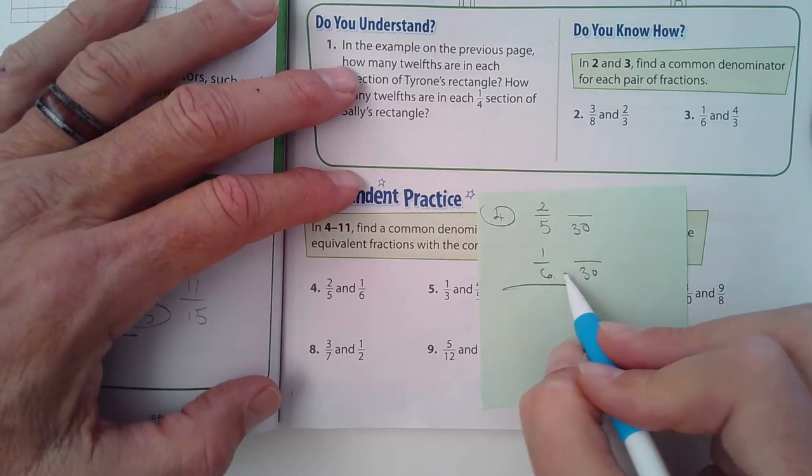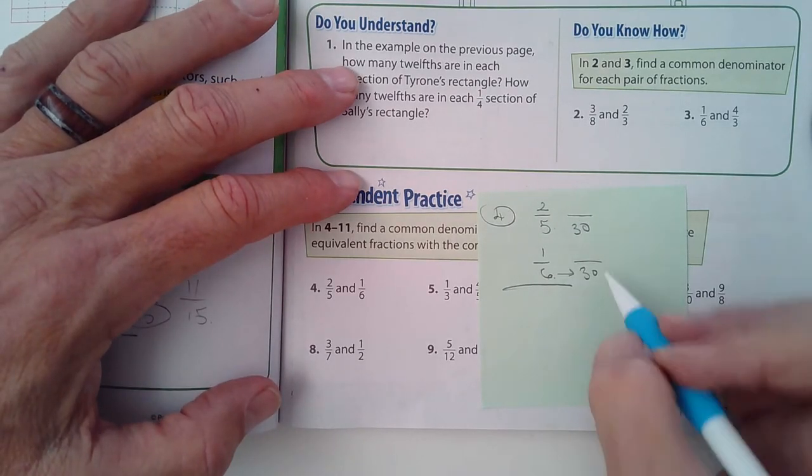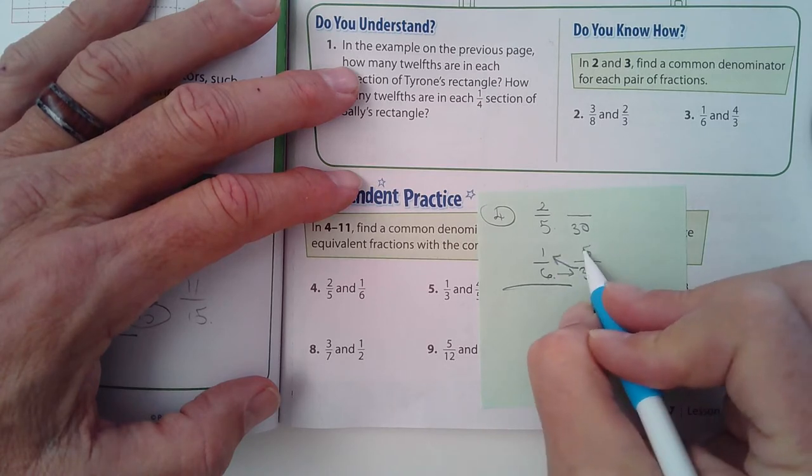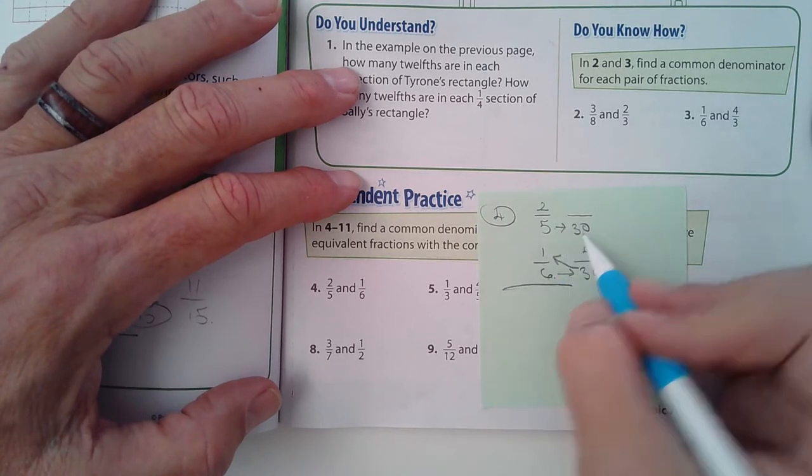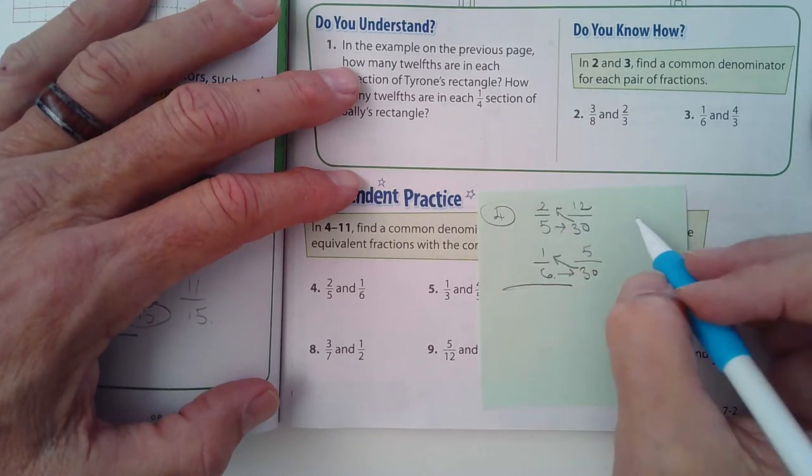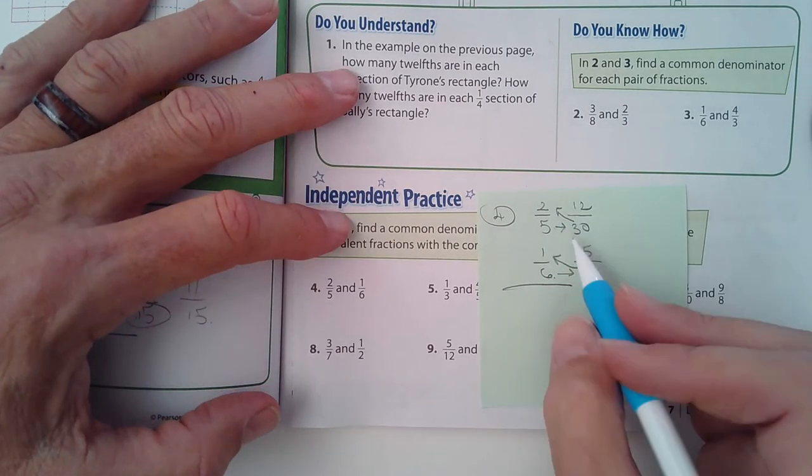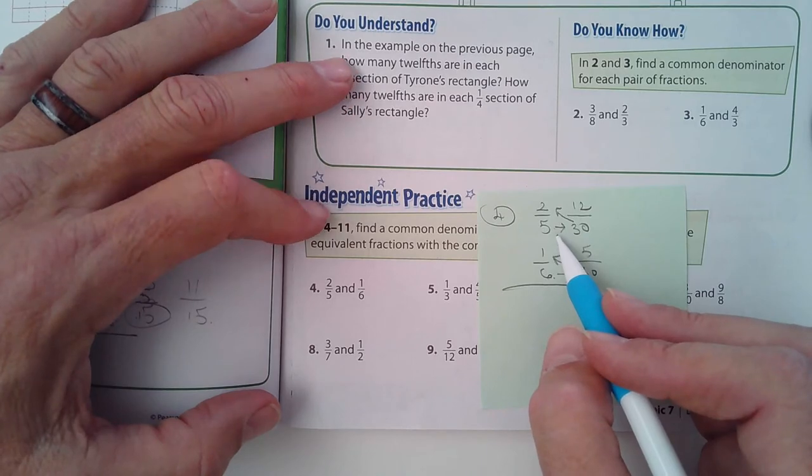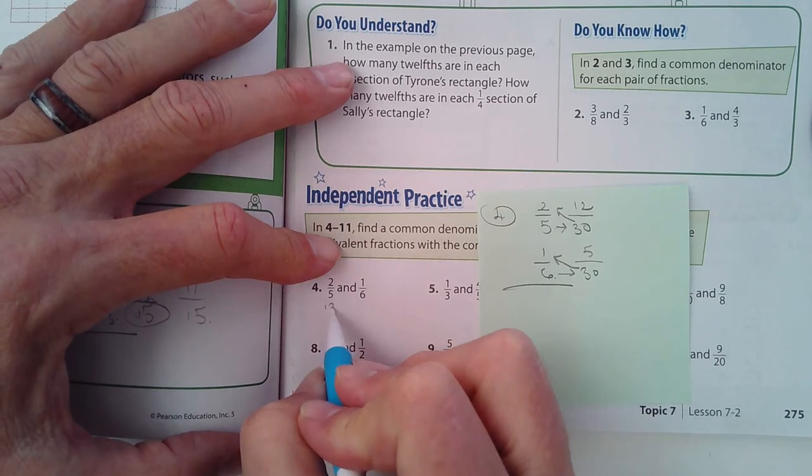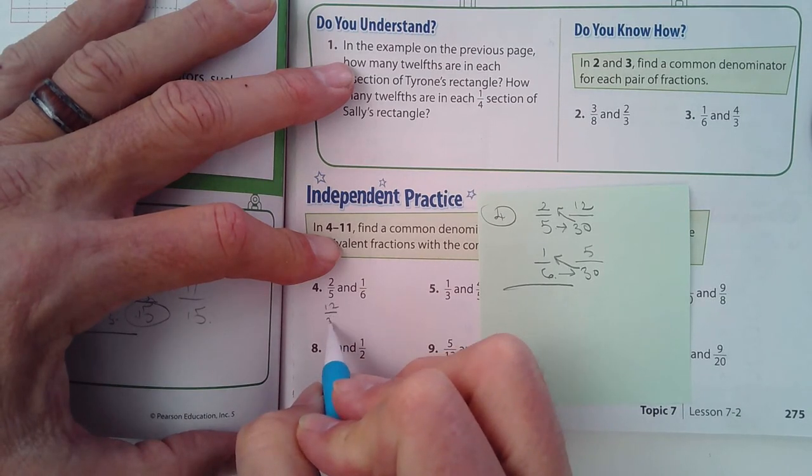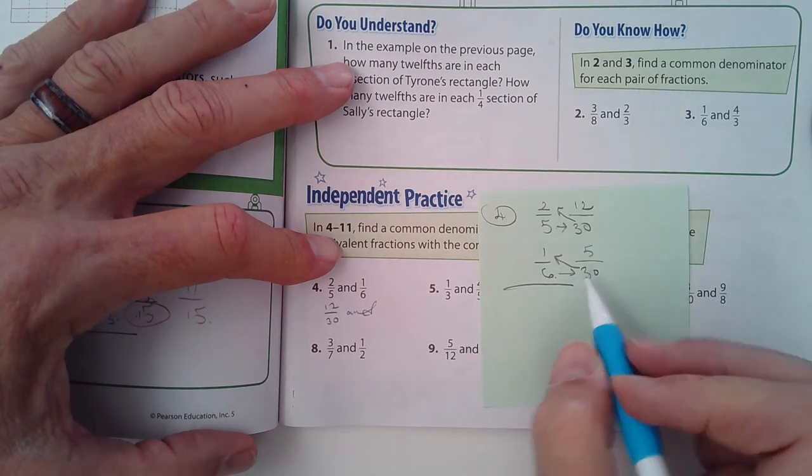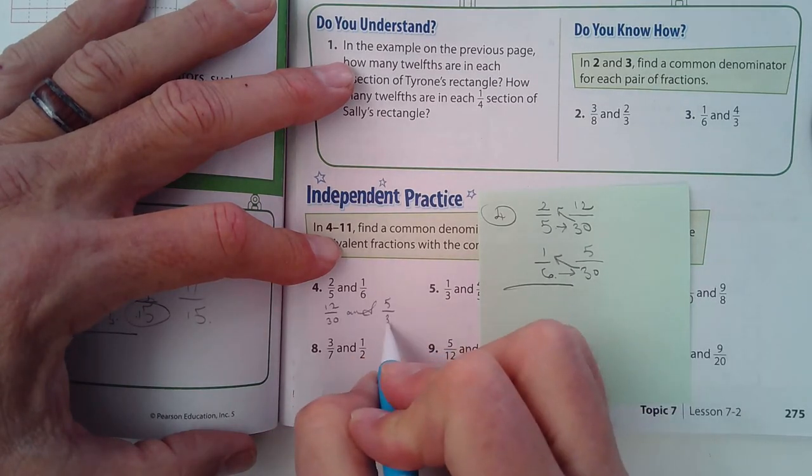Okay, six goes into thirty five times, five times one is five. Five goes into thirty six times, six times two is twelve. So rewrite them with equivalent fractions. So this would then be twelve over thirty and five over thirty.